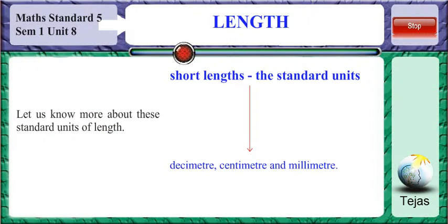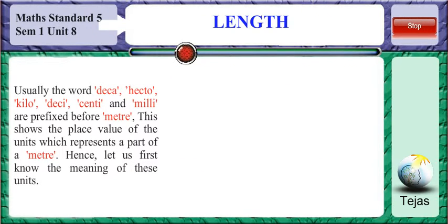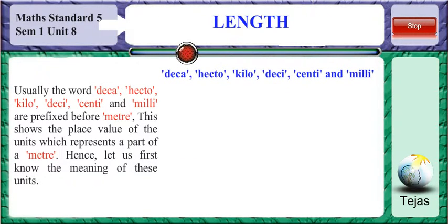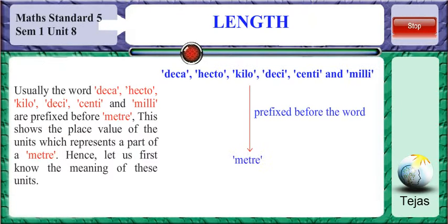Let us know more about these standard units of length. Usually, the words deca, hecto, kilo, deci, centi, and milli are prefixed — put before the word meter. This shows the place value of the meter and represents what part of a meter each unit is. Let us first know the meaning of these prefixes.